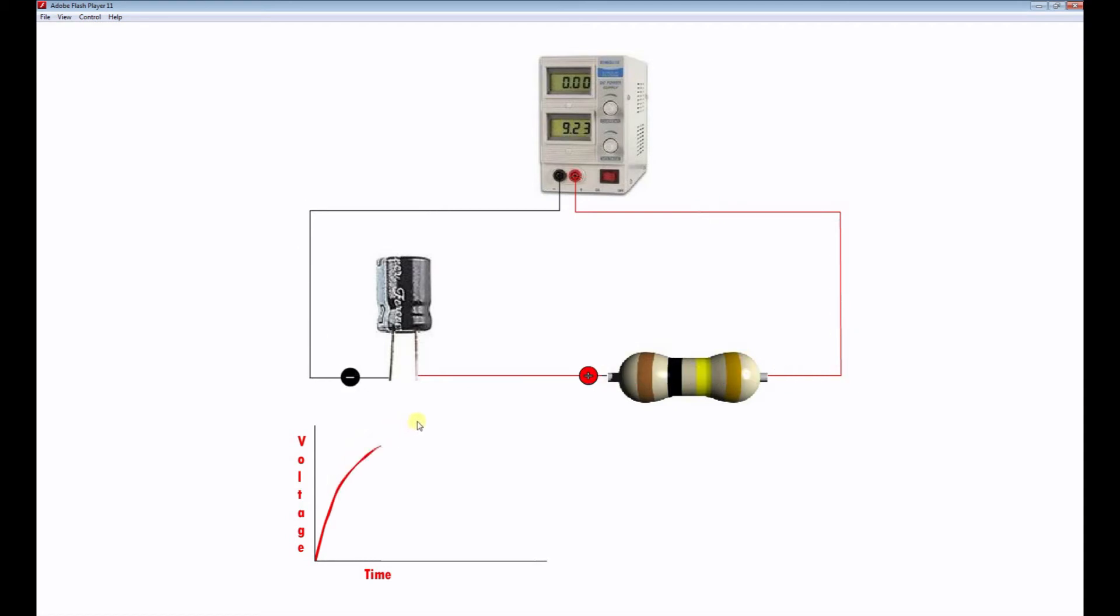What we mean by that is the capacitor has reached the same potential as the supply voltage. When this happens in the DC circuit, no further current will flow.